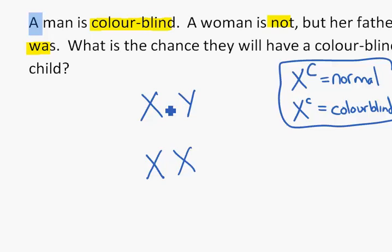A man is colorblind. He only has one X, so it must be the colorblind recessive allele. A woman is not colorblind, so she must have a big C. But her father was colorblind.